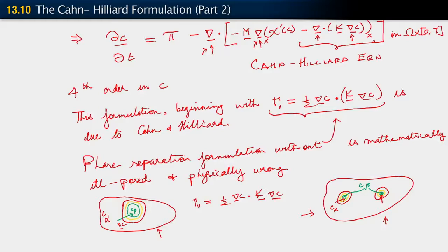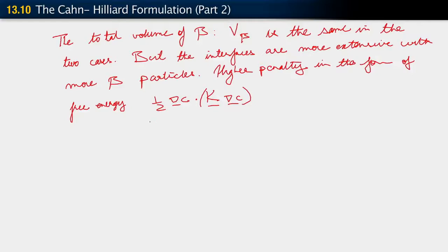The second case here, the one with the arrow, this one, has more of this type of contribution to the total free energy from the presence of interfaces. So the two cases are different. Since the tendency is for the total free energy to decrease, what happens is that the smaller particles disappear and larger particles are formed.